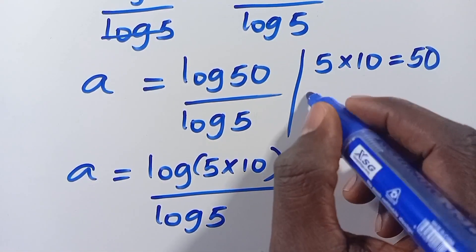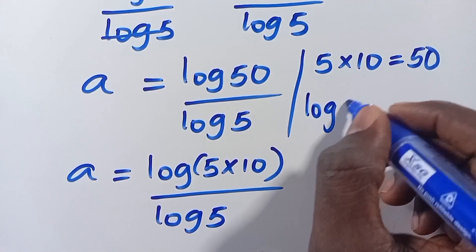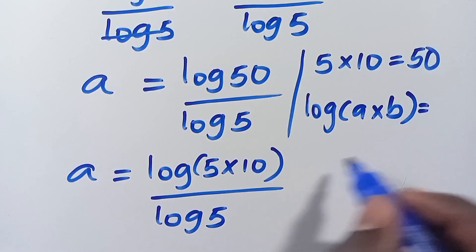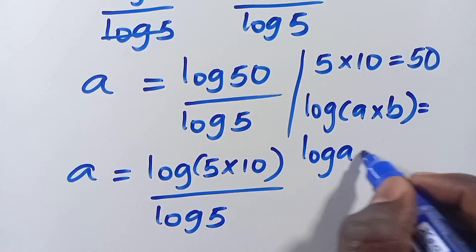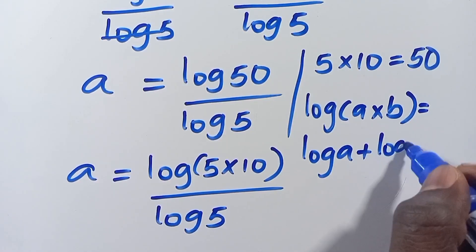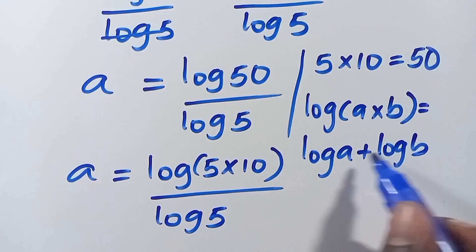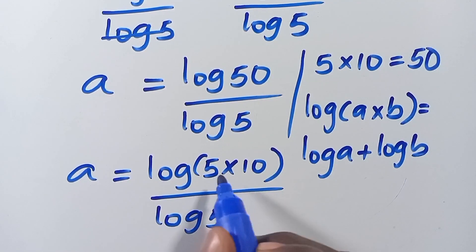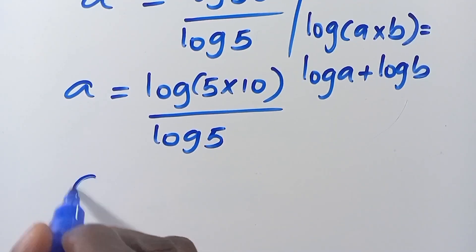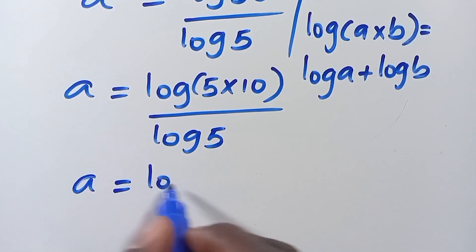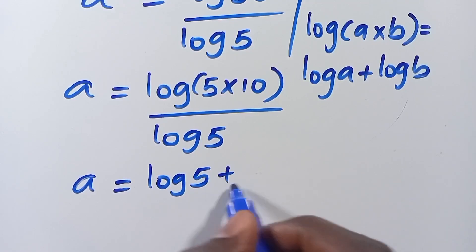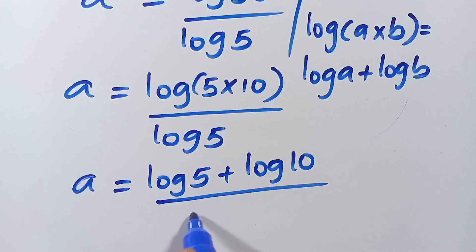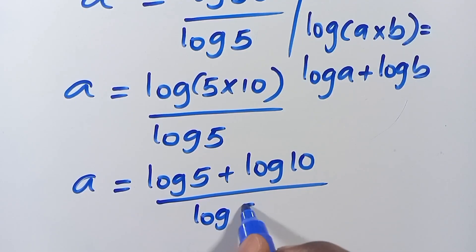Then let us recall that when we have log of (A times B) in parenthesis, this equals log A plus log B. So when we apply this — multiplication inside the log changes to addition — we are going to have A equals log 5 plus log 10, divided by log 5.